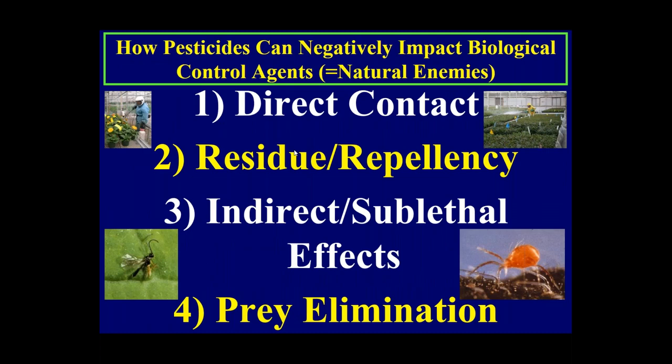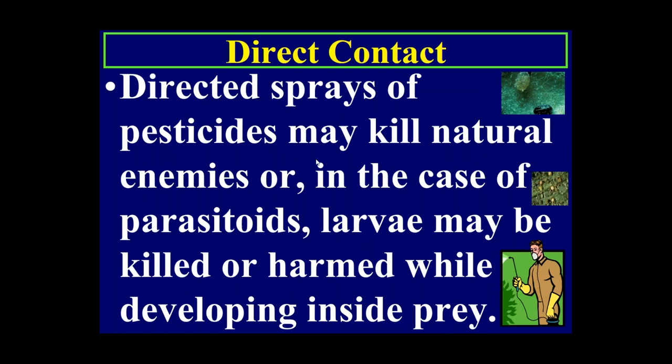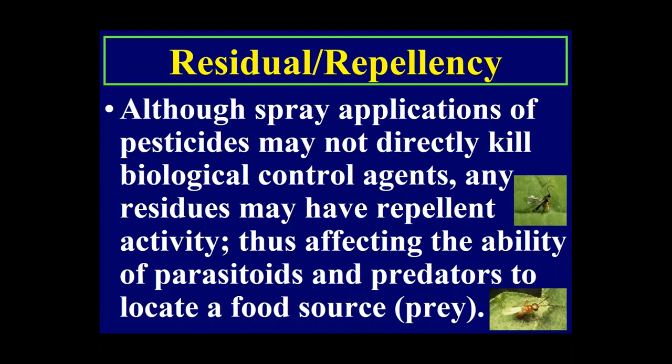There are four ways pesticides negatively impact biological control agents: direct contact, residue repellency, indirect and sublethal effects, and prey elimination. Direct sprays of pesticides may kill natural enemies outright, or in the case of parasitoids, larvae may be killed or harmed while developing inside the prey.